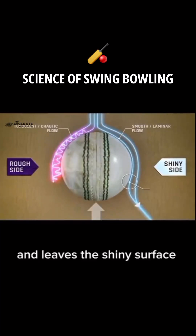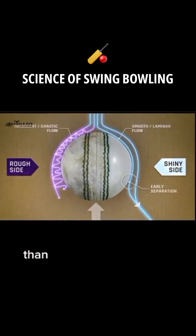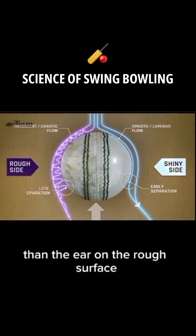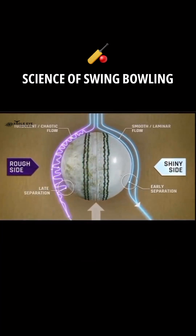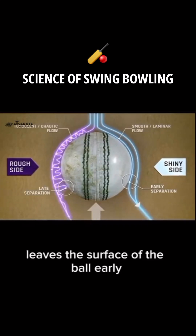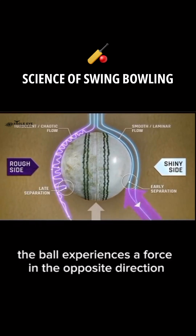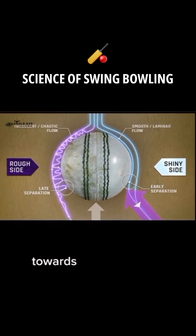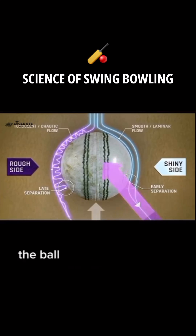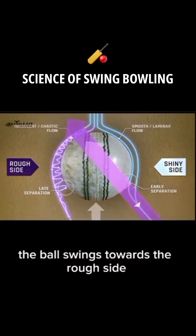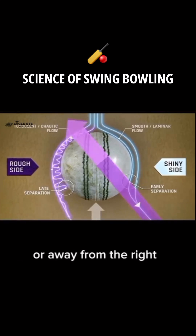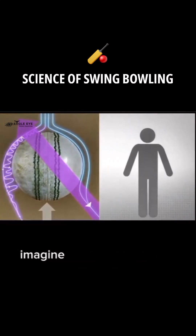The air glides along the shiny side and leaves that surface earlier. When the air on the shiny side leaves the surface of the ball early, the ball experiences a force in the opposite direction, towards the rough side. As a result, the ball swings towards the rough side, or away from the right-handed batter.